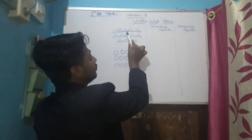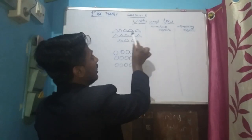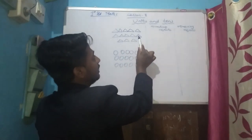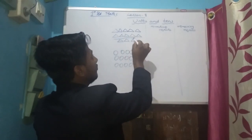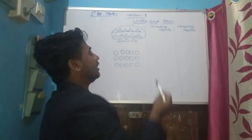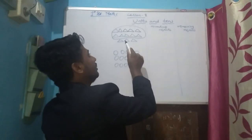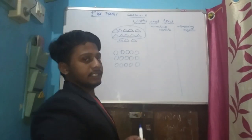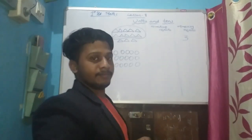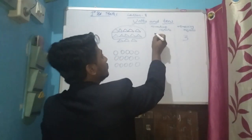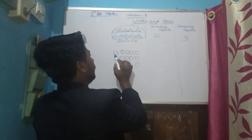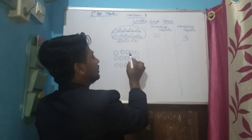Let's count: one, two, three, four, five, six, seven, eight, nine, ten. So till here we circle ten. Remaining is how many? One, two, three — three is remaining. Rounded up objects are ten.